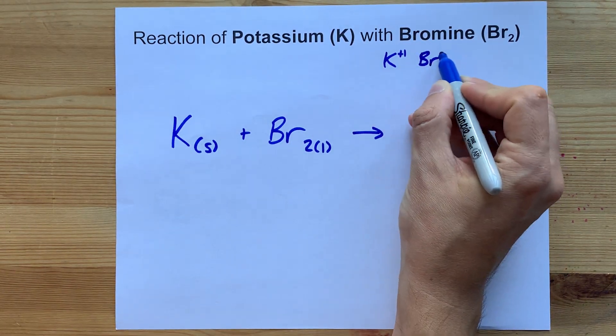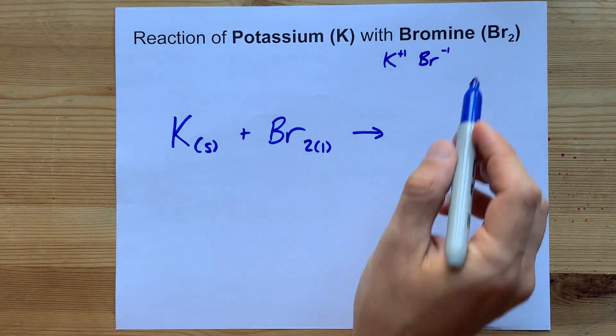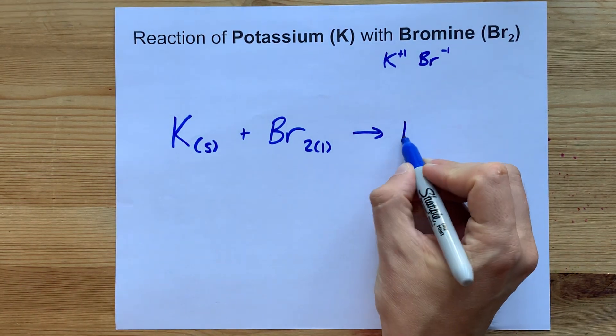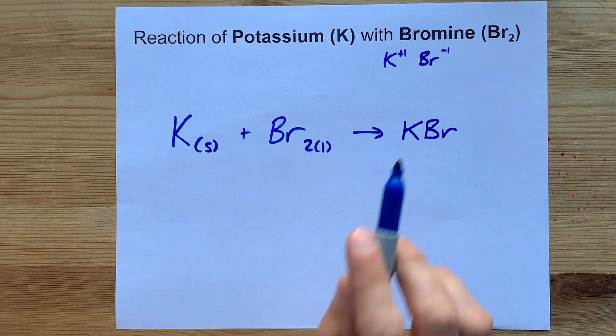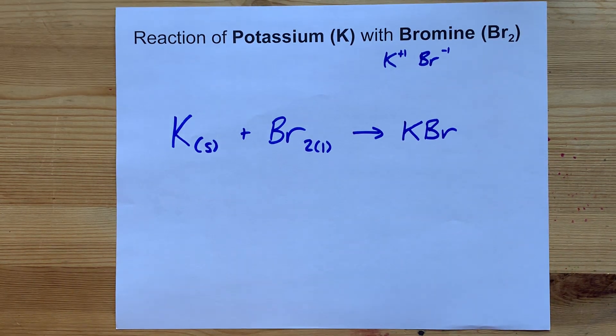And the halogen, bromine, likes to have a charge of minus one. When you crisscross these charges, you end up with KBr, which is the formula for potassium bromide, a simple ionic salt.